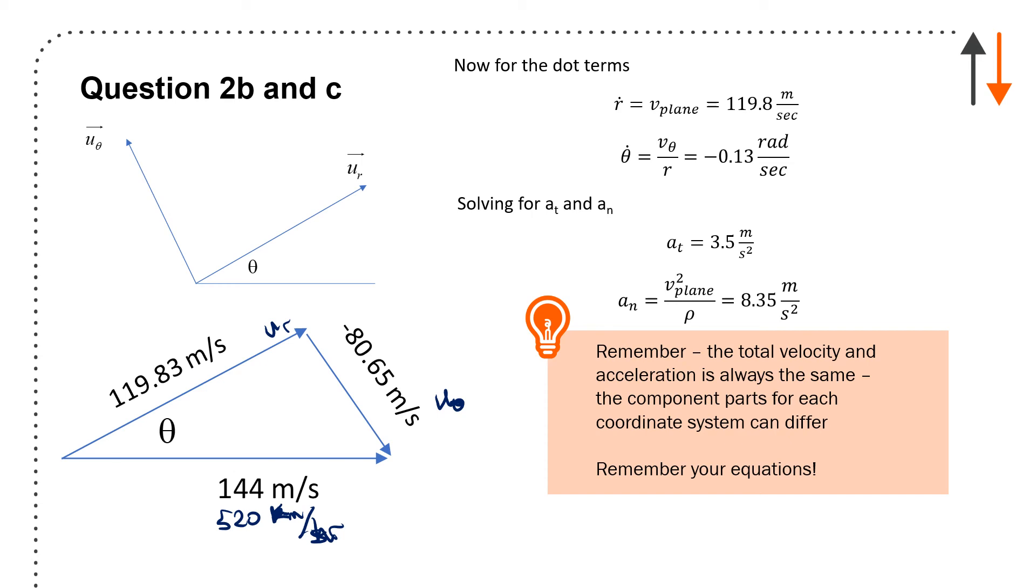I was already given that tangential acceleration is 12 kilometers per minute squared, which ends up being 3.5 meters per second squared. Acceleration tangential is tangential to the curve. Acceleration normal is with respect to the loop: v² plane / r = 8.35 meters per second squared. Remember, total velocity and acceleration are always the same—we're just breaking them up into different components: x-y, r-θ, and n-t.